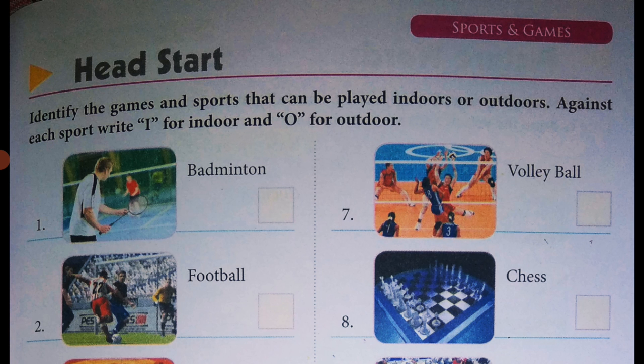The first picture — the name of the sport is badminton. It is an outdoor game. In the box, write O for outdoor.